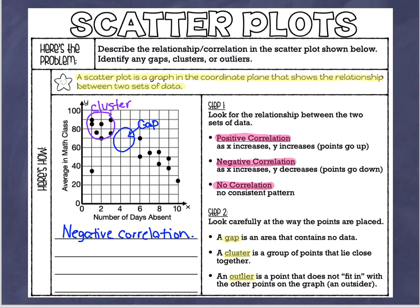I'm sure you can spot the outlier — it's this point over here. It doesn't make sense with the rest of the data. This point says a student was only absent for one day the whole marking period but has an average of about 35. That doesn't make sense — you'd expect a student who missed almost no math lessons to have a much higher grade. All the other points are in a line going down, and then this one is out here all by itself.